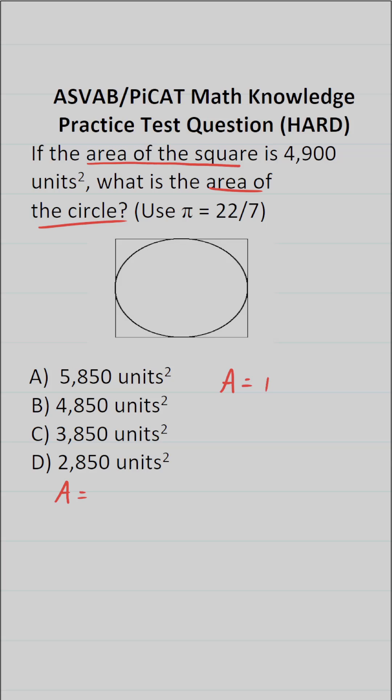Area of a circle is going to be pi r squared, where r is the radius. Area of a square is its side length squared.